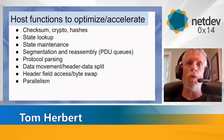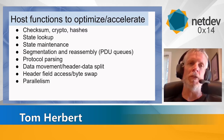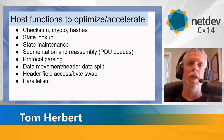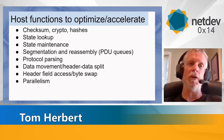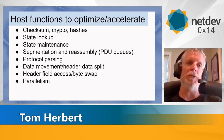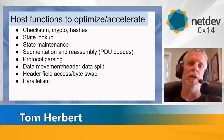Looking at what we can do in the host stack, we can consider which functions we can accelerate or offload to hardware. Commonly accelerated functions include checksum offload, crypto, and hashes. State lookup is also something that could be optimized — even the hash lookup in a hash table could be automated or accelerated, along with the procedures to track down the actual state in a hash table.